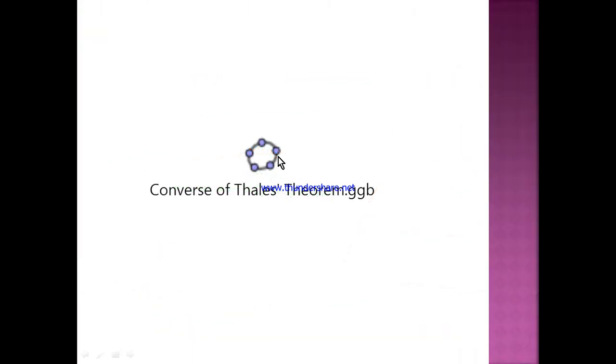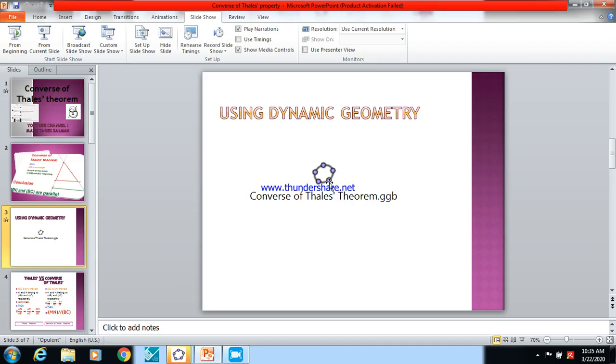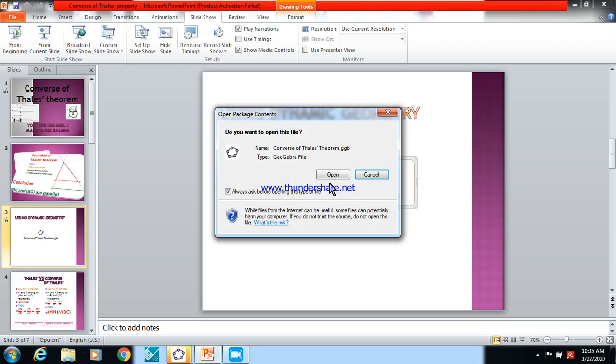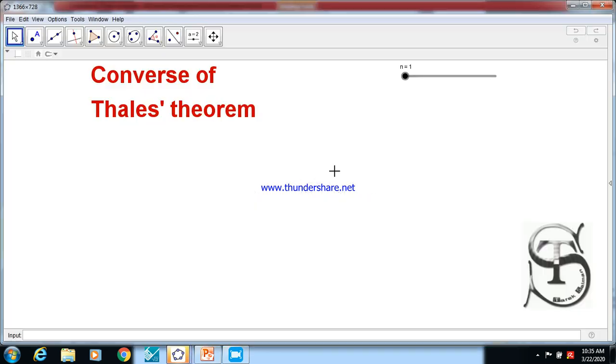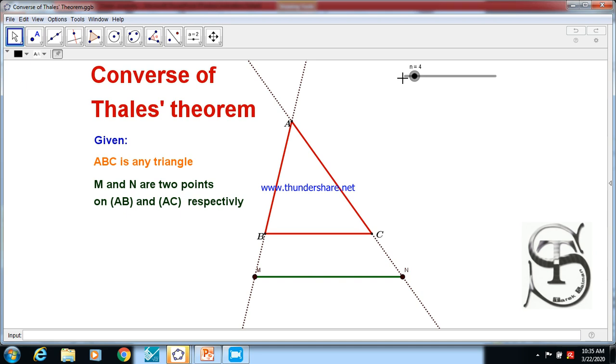Let us go to a GeoGebra activity to check that. In this video, I will talk about Converse of Thales' theorem. I have another video on my YouTube channel to talk about Thales' theorem. First, given ABC is any triangle, M and N are two points on AB and AC.